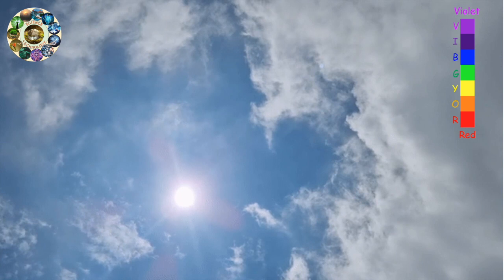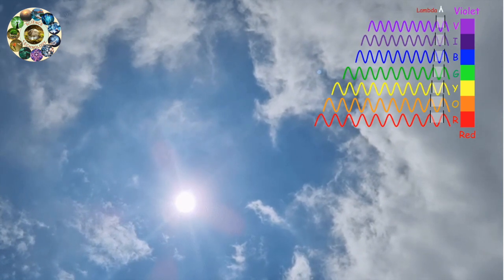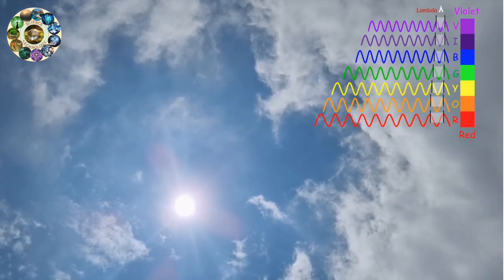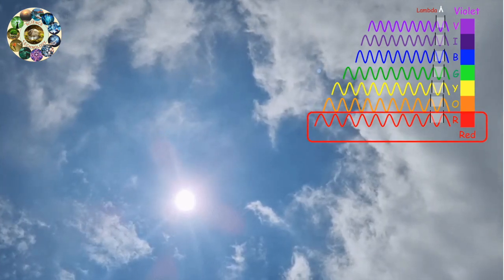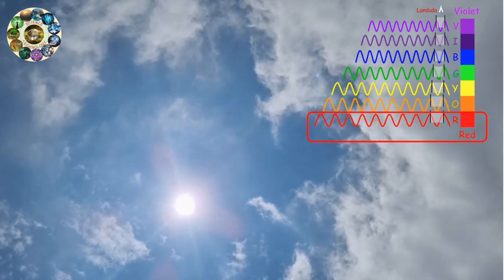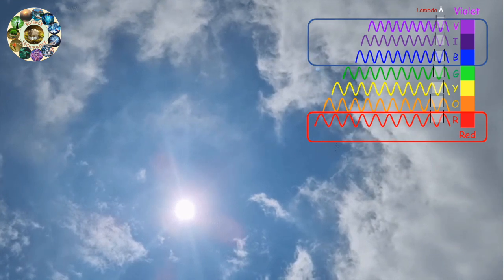We can think of light as being a wave of energy, and different colors all have a different wavelength. At one end of the spectrum is red light, which has the longest wavelength, and at the other is blue and violet lights, which have a much shorter wavelength.